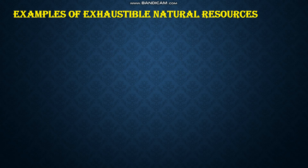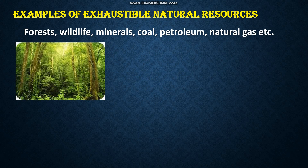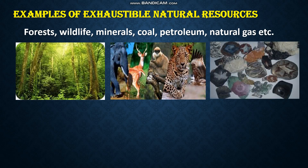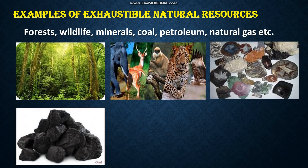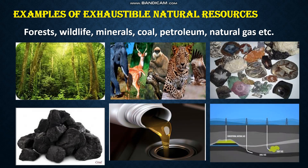Examples of exhaustible natural resources are forest, wildlife, minerals, coal, petroleum, and natural gas. As we use them, they will get exhausted. For example, if you destroy a forest, it will not get renewed in one or two days — it will take several years. Petroleum products, if you use them, will get exhausted.